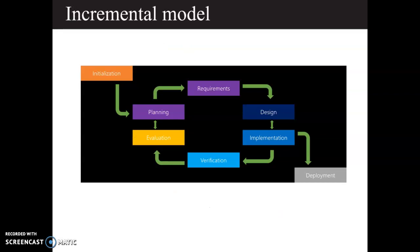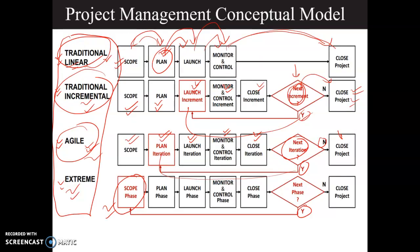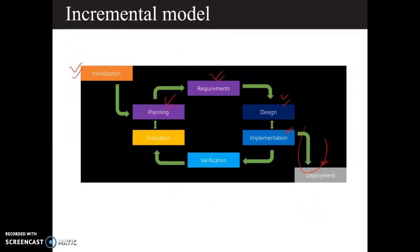In the incremental model, you start by initializing and making your plan. Then based on the initialization, you identify the requirements, create the design, write code for implementation, and deploy and test it. You then deploy and keep checking in an iterative manner — deploying, testing, verification, planning, and evaluation. This process keeps running in an iterative manner until you complete the project.